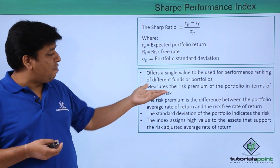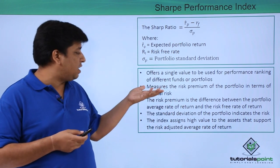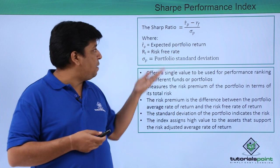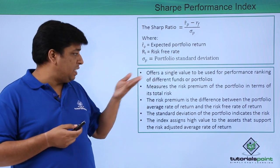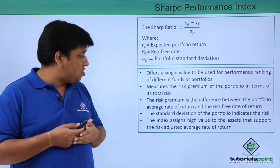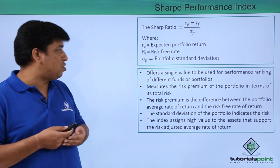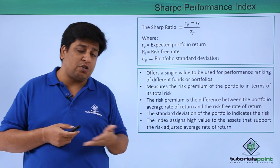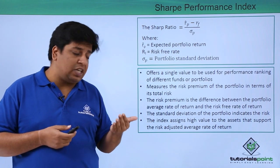The Sharpe Performance Index offers a single value to be used for performance ranking of different funds or portfolios. Based on this Sharpe ratio, you can rank portfolios. The Sharpe Performance Index measures the risk premium of the portfolio in terms of total risk.